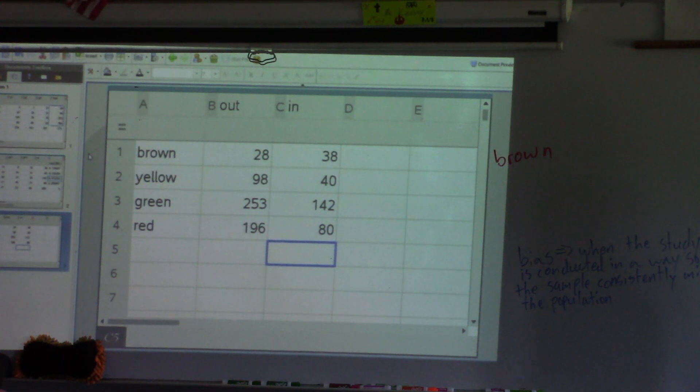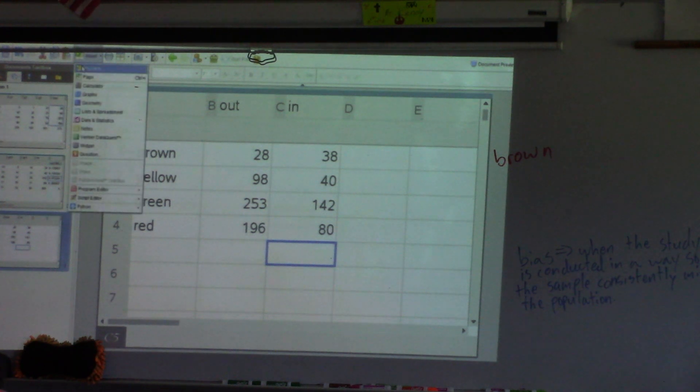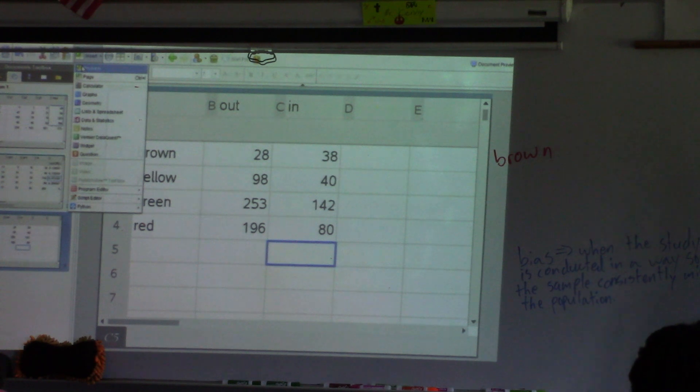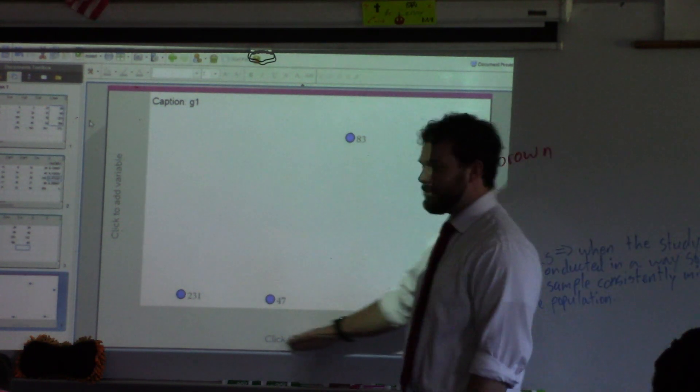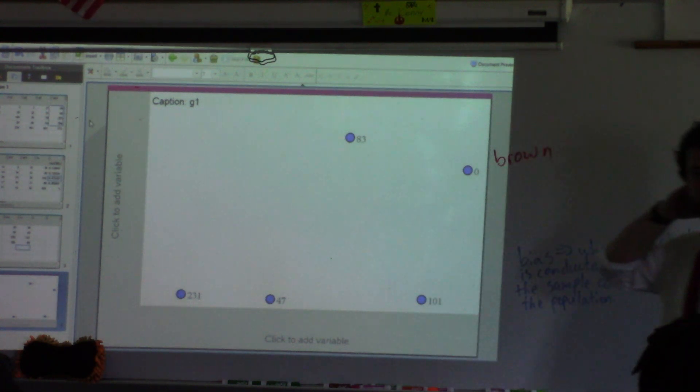Once you have those frequencies in that new sheet, create another new page. Insert a new page. What unit are we studying right now? Statistics. What page do you think we're going to make? Statistics. You see where it says data and statistics underneath list and spreadsheets? So, do a data and statistics page.